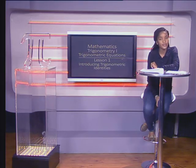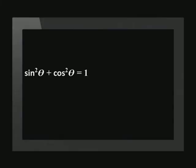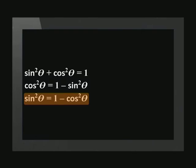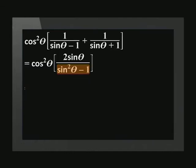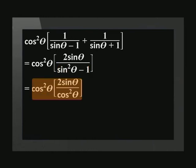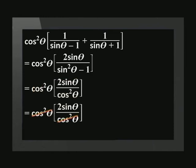Let us break away for a moment to show that the squares identity can be manipulated. It is important to remember these manipulations, as not all questions are straightforward. From sin squared theta plus cos squared theta equals 1, we can make cos squared theta equal to 1 minus sin squared theta, and also sin squared theta equal to 1 minus cos squared theta. This is the variation we are going to use. Going back to the question, we replace sin squared theta minus 1 with negative cos squared theta. This gives us cos squared theta times (2 sin theta over cos squared theta). We can cancel cos squared theta, so our final answer is 2 sin theta.